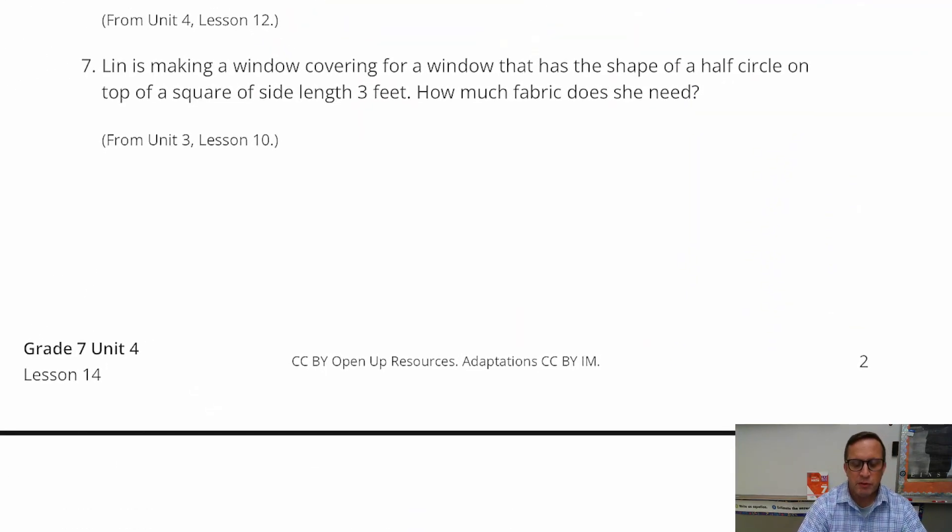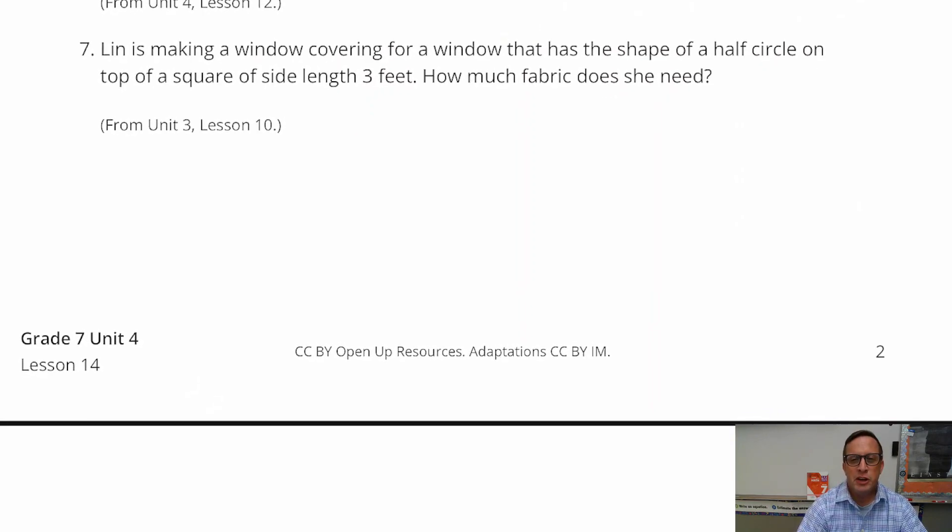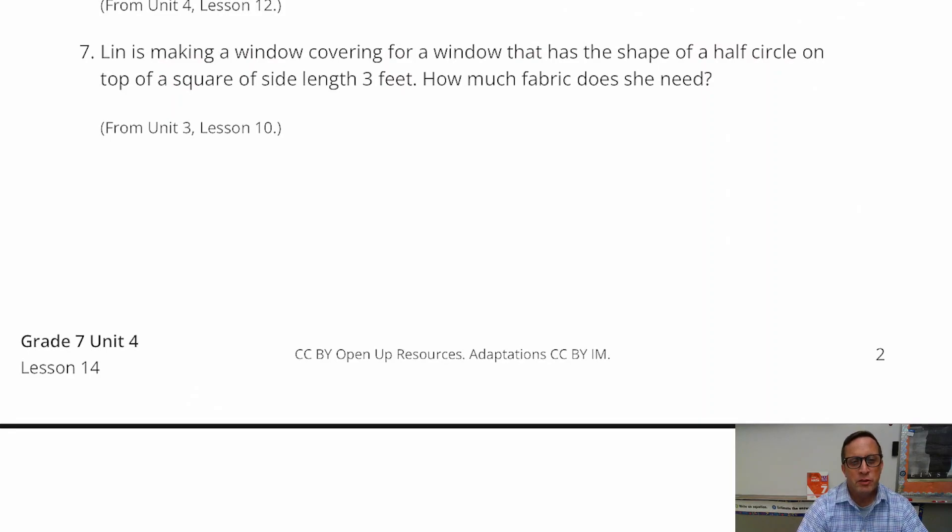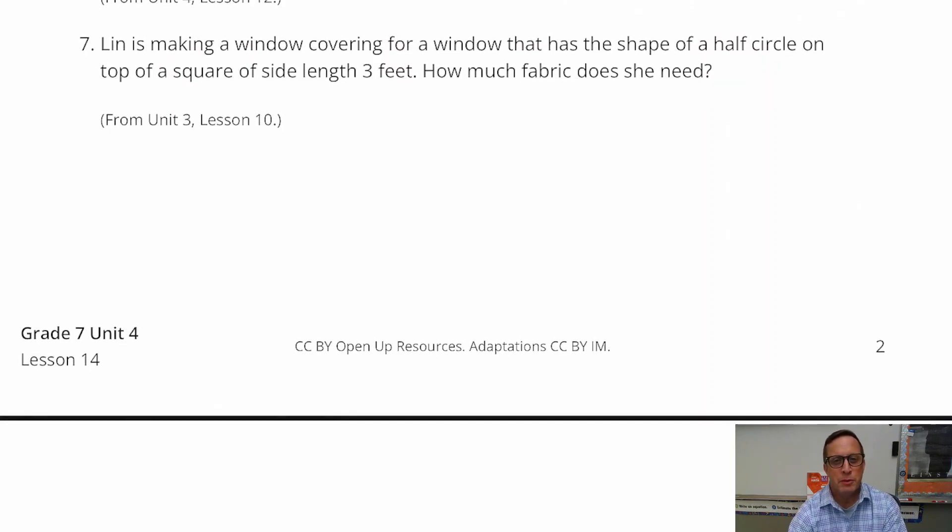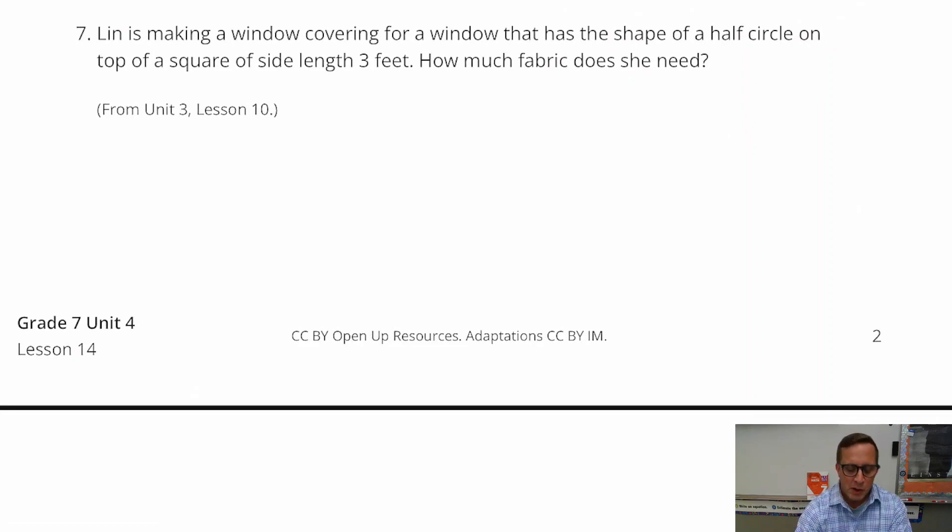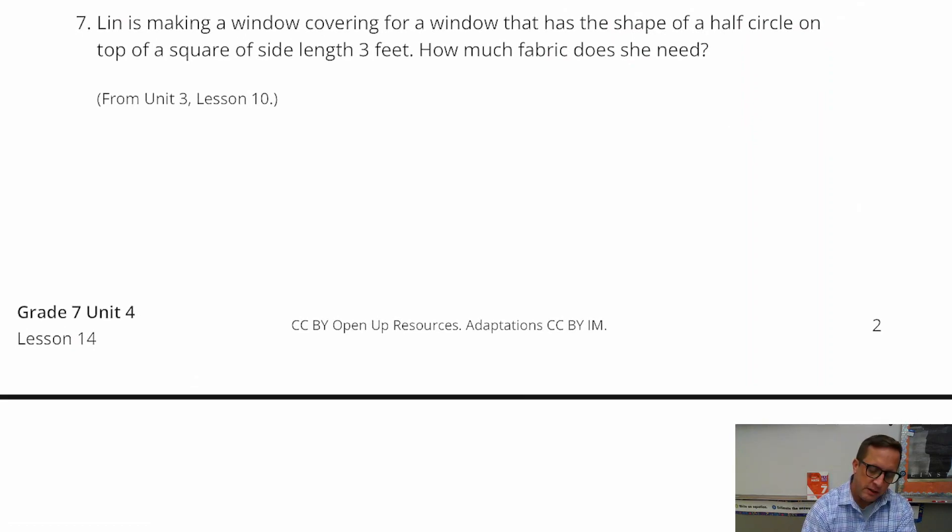Lynn is making a window covering for a window that has a shape of a half circle on top of a square of side length three feet. How much fabric does she need? So the window's a square, and there's a semicircle right there. And the only information we're given is that the square has three feet. So how much fabric does she need?